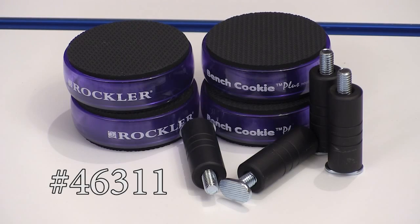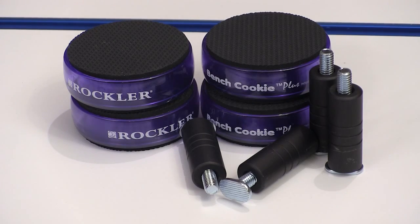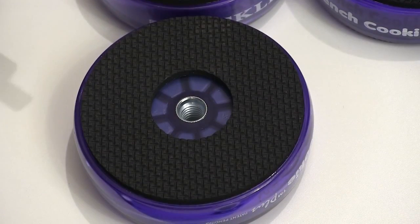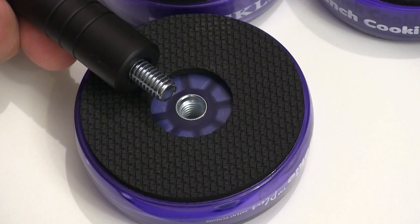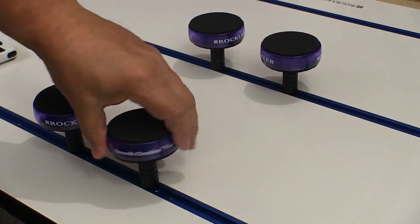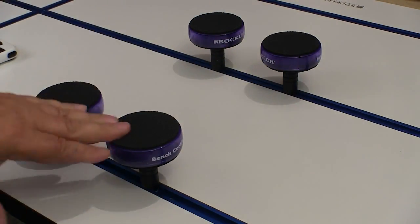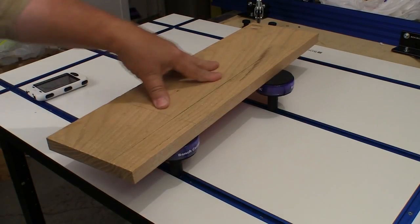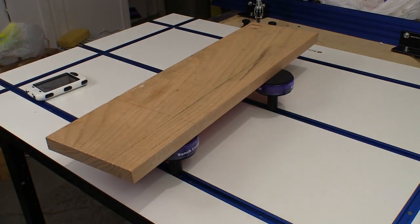Since so many of us already use the Rockler bench cookies, they came up with a set of T-track risers that lets you use them on the table. The T-track risers come with these bolts that fit into the T-tracks and screw into the bottom of the bench cookie plus. That lets you slide the assembly to wherever you need it on the table. When you have them located properly, you just spin the cookie down to tighten it into the track. A lot of hand operations are just easy to do when the wood doesn't move and it's elevated from the surface a little bit.